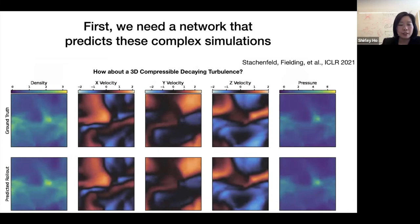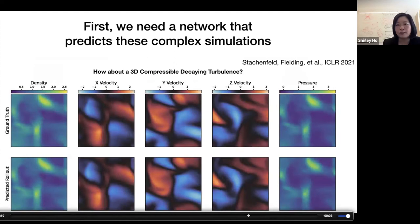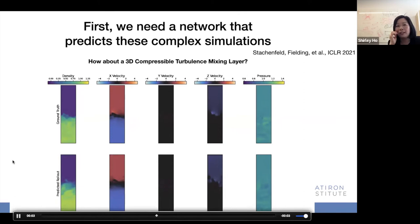And you can see qualitatively it's working fairly well. I can show you the spectral components. Basically the power spectrum analysis also works fairly well. We have compared to all the current benchmark and realizing that a very simple dilated residual neural net does basically better, slightly better than all the other methods out there with all the physical priors or whatever. And then we also were showing it for these 3D compressible turbulence mixing layers for ground truth and the predicted rollout.